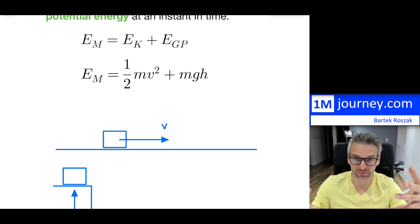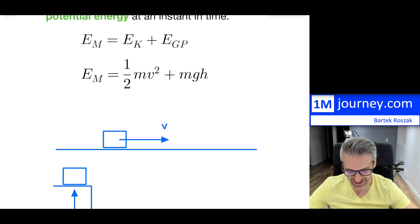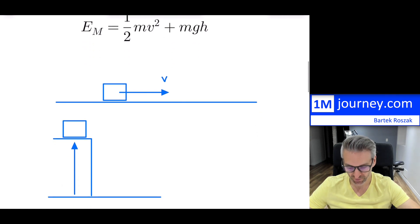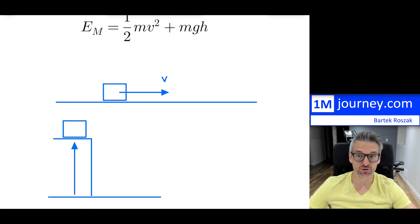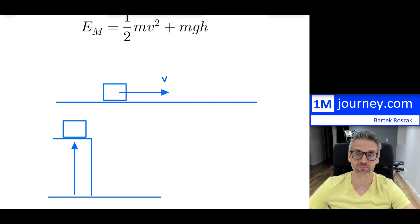So that is something we should think about. The two easier problem types are: if you're not moving, there's no kinetic energy; and if you're sitting on a surface, there's no gravitational potential energy.